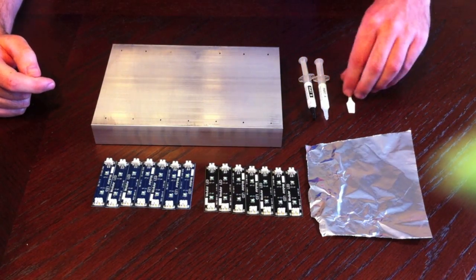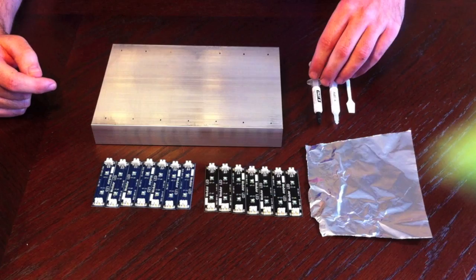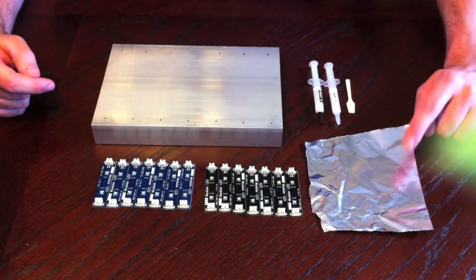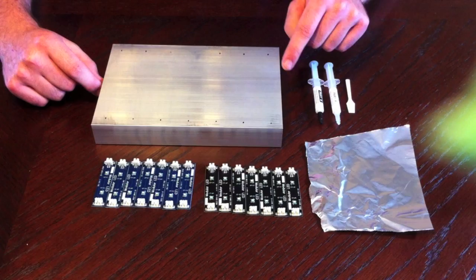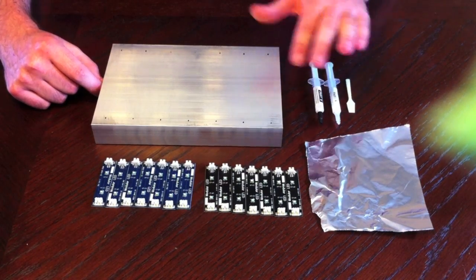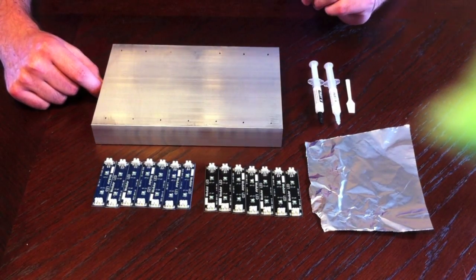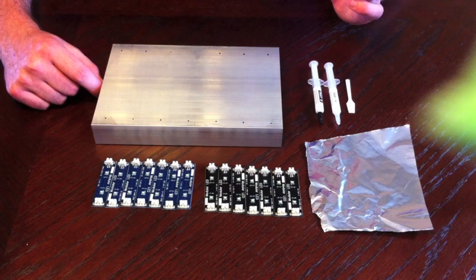I've also got some of the Arctic aluminum glue and just a little piece of foil to mix the glue on. I've already cleaned the heat sink. I just used a little bit of rubbing alcohol to clean the top surface out here. Just let that dry and then wipe off any excess.